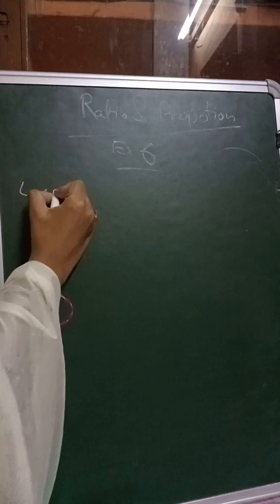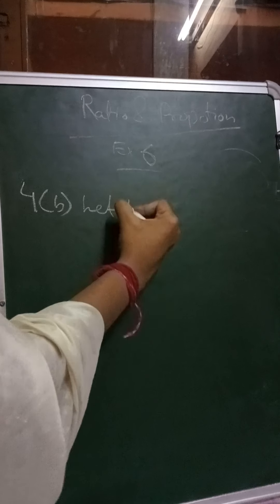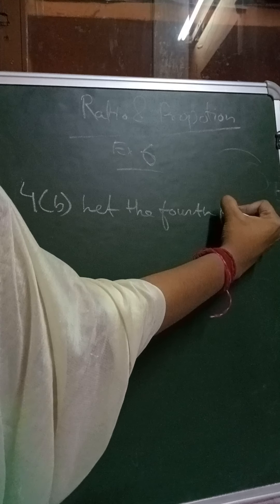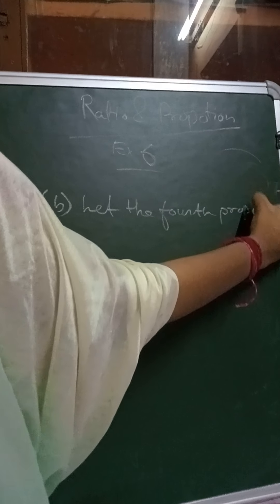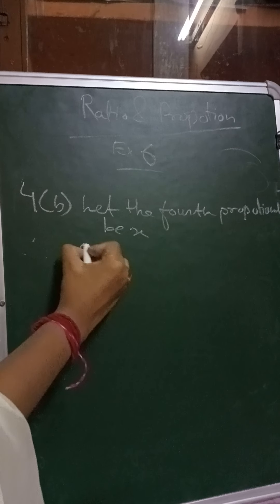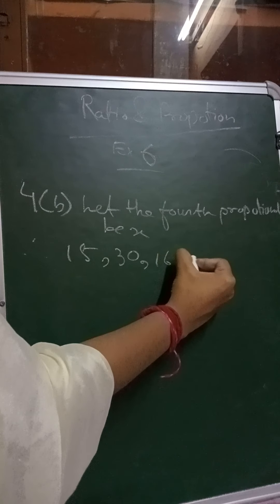So first I am doing sum number 4B where it has been asked to find out the fourth proportional. The first three are given, we need to find the fourth one. So we will consider let the fourth proportional be x. Therefore we can write the proportions as 15, 30, 16, x.